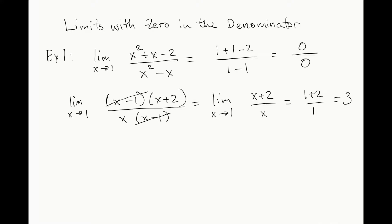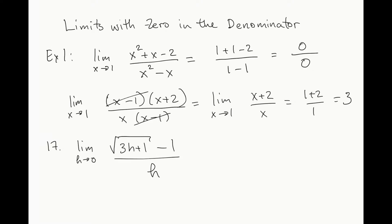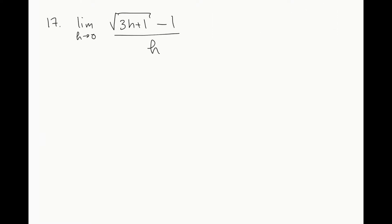However, sometimes we are given more complicated cases where at first it seems like there is no common factor. For example, take the limit as h goes to 0 of (sqrt(3h plus 1) minus 1) divided by h. In this case, when we look at this problem, there doesn't seem to be an obvious way of canceling factors. However, these problems are typically very carefully chosen so that you are just a step away from turning the equation into something you can work with.